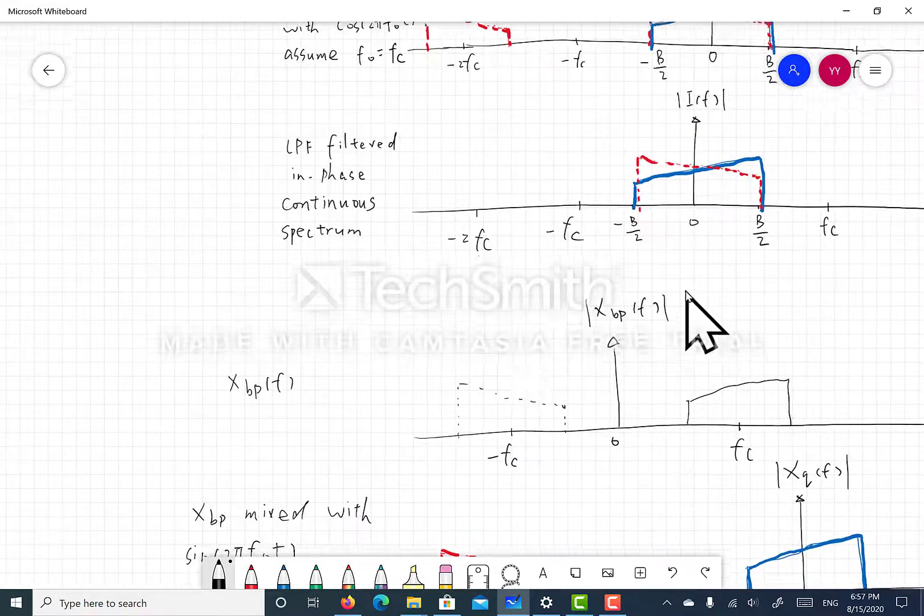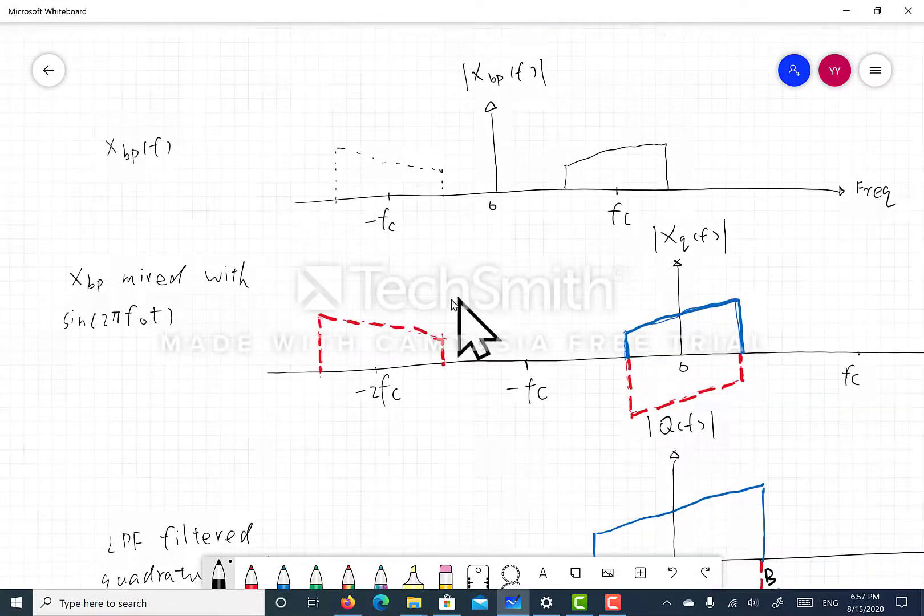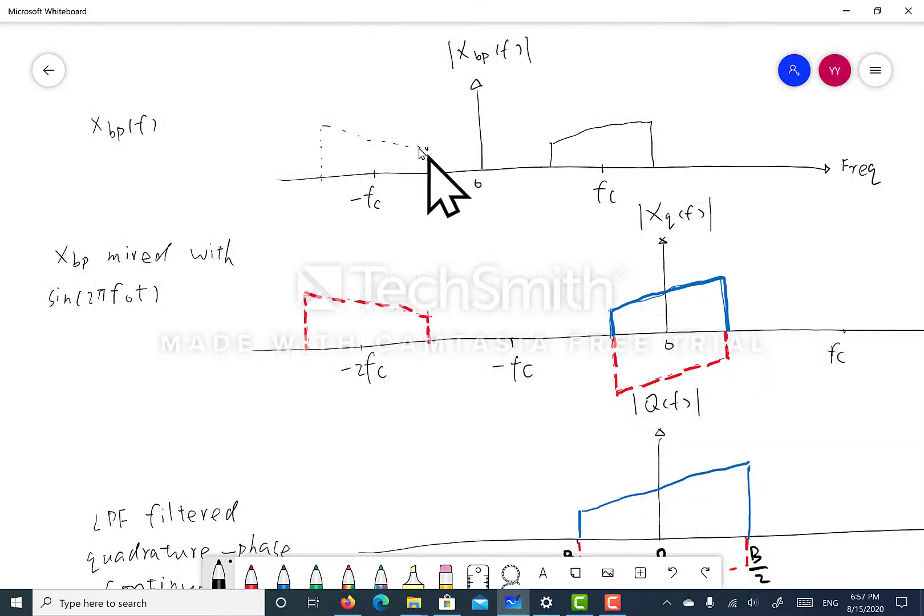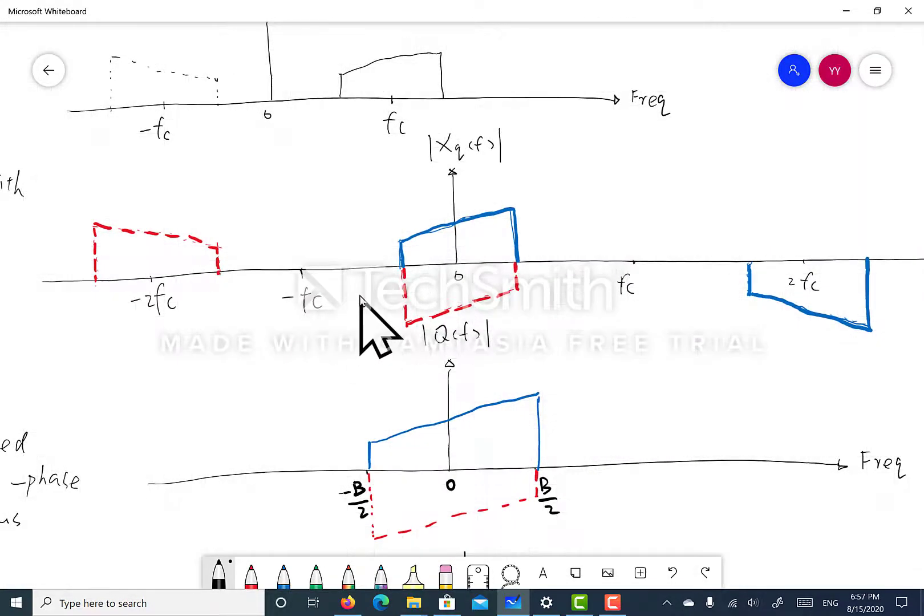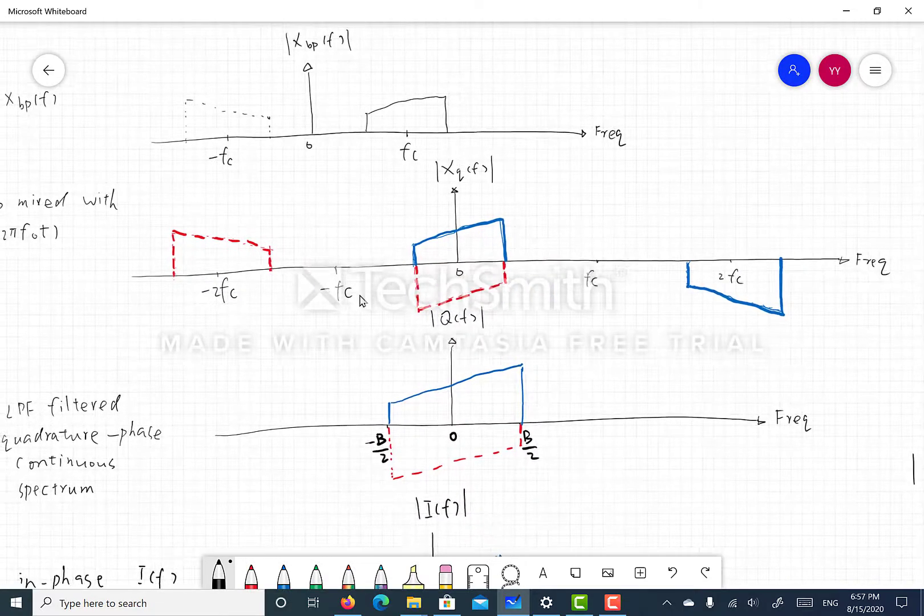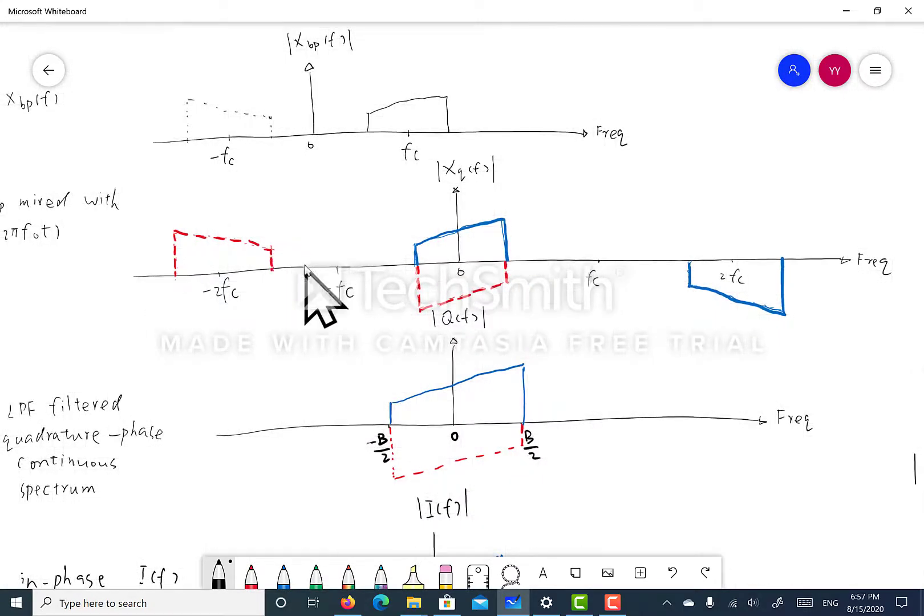Very similar to the in-phase mixing, for the quadrature phase mixing, this is the same incoming RF tone. If we mix it with a sine wave, this is what we get. As you can see, for the negative spectrum, the frequency component that used to be at minus fc gets mixed up to minus two times the carrier and down to DC. Similarly, for the positive side component, it gets mixed up and mixed down.